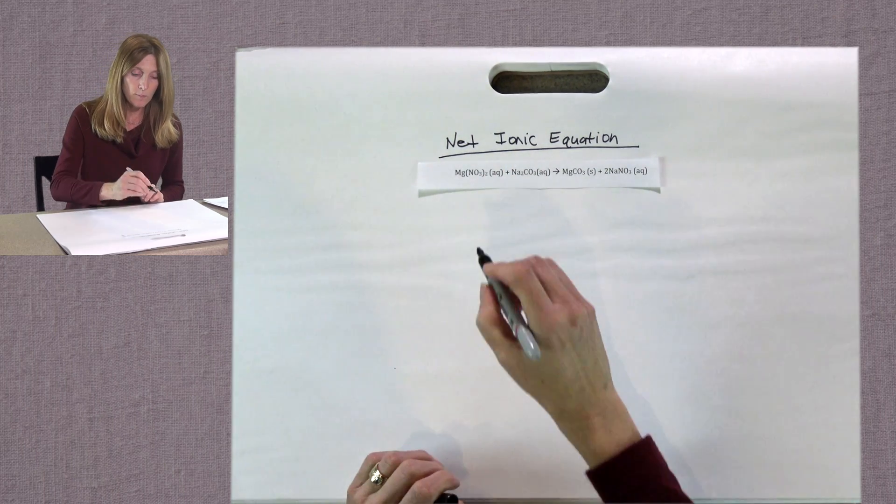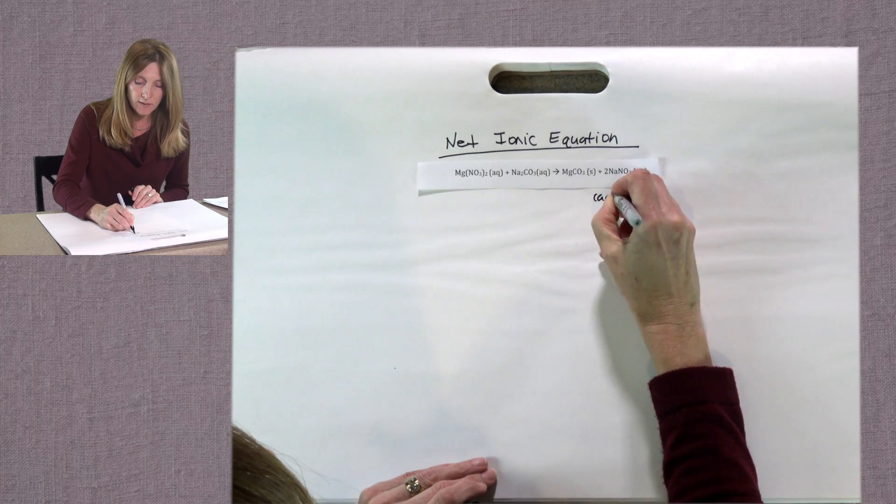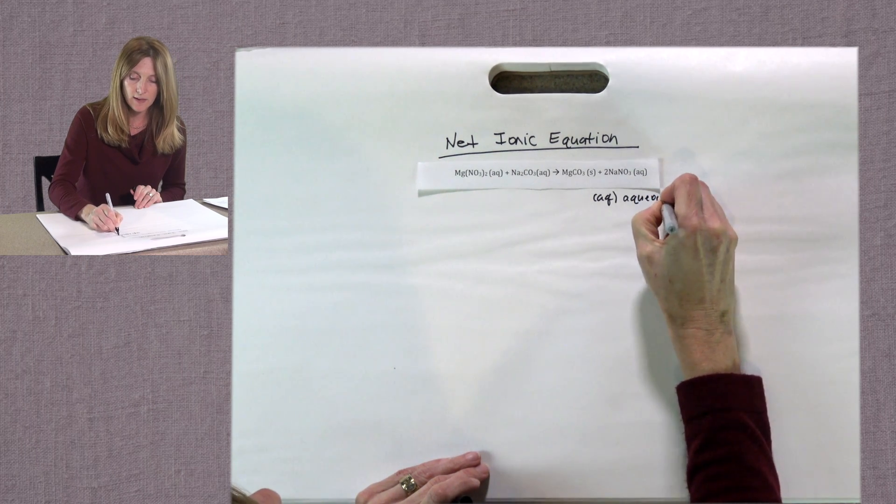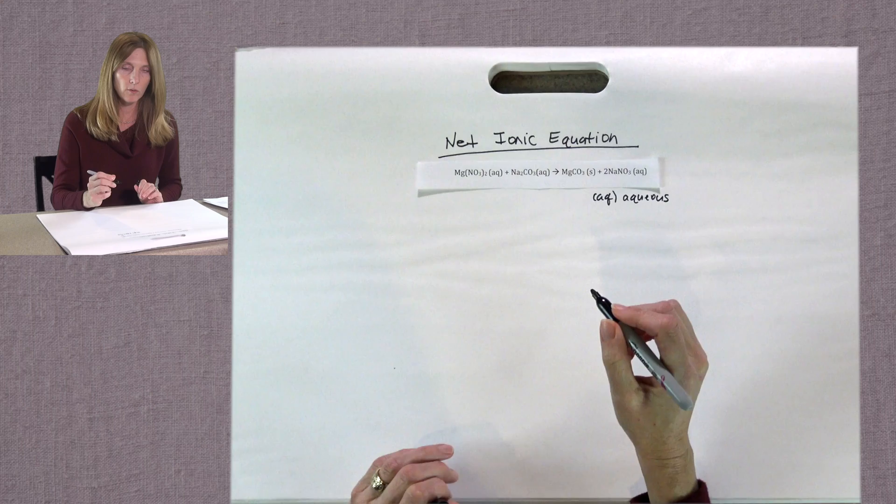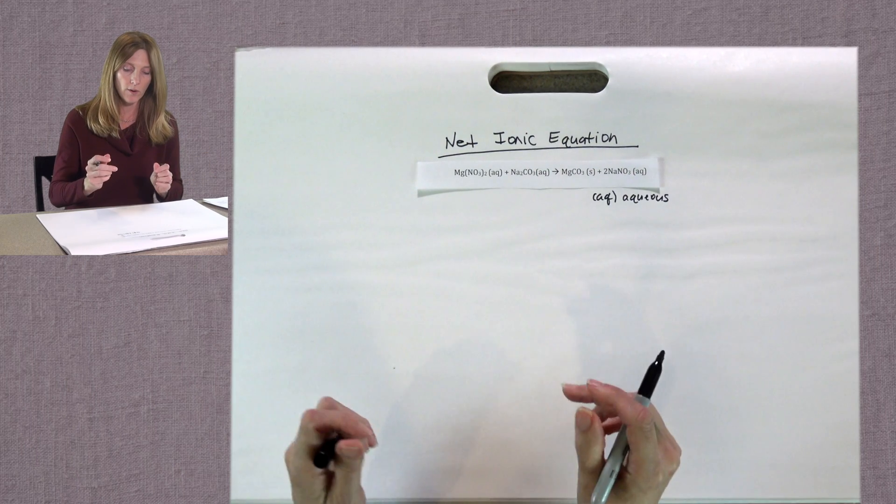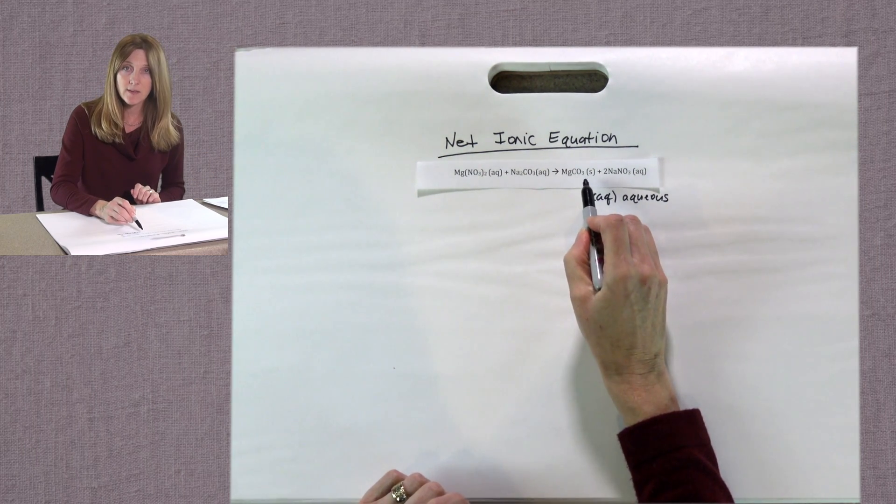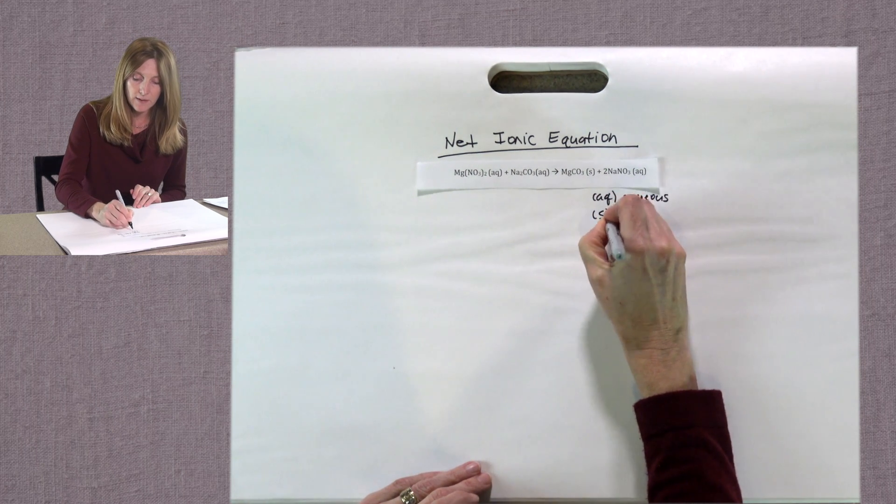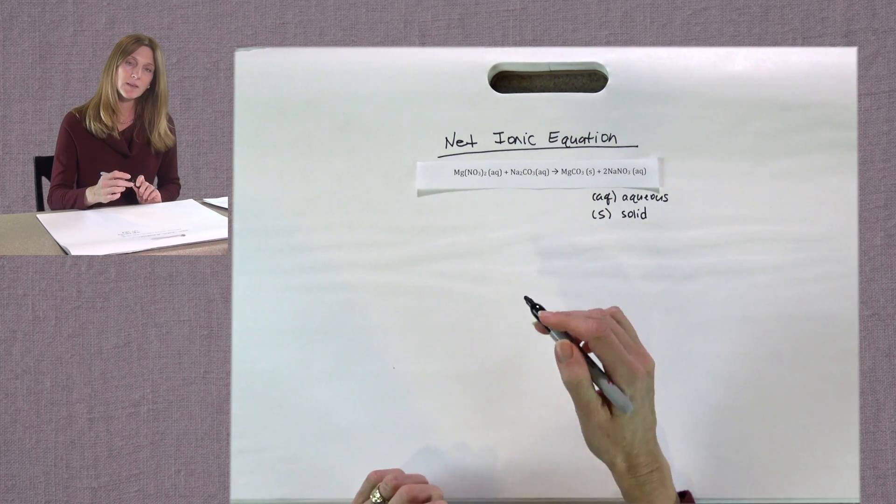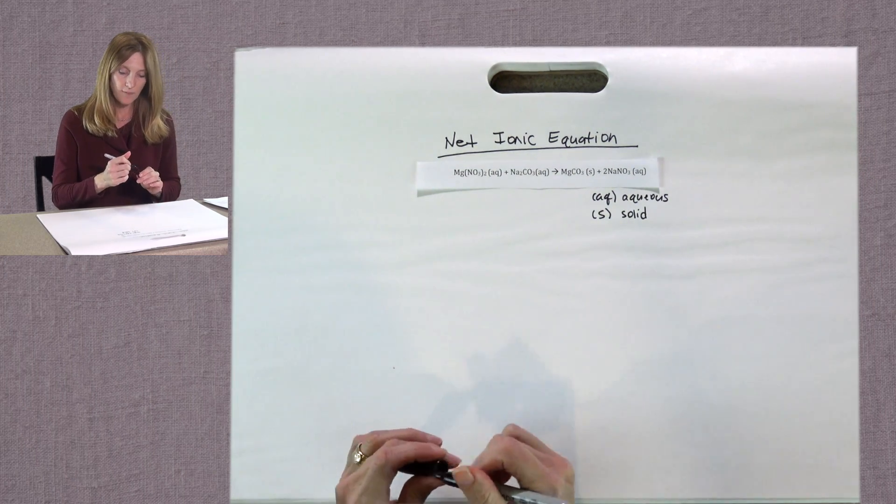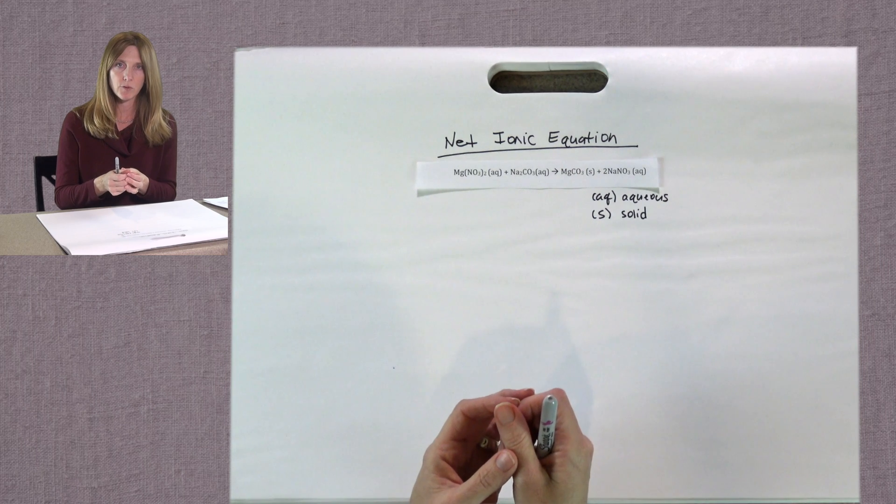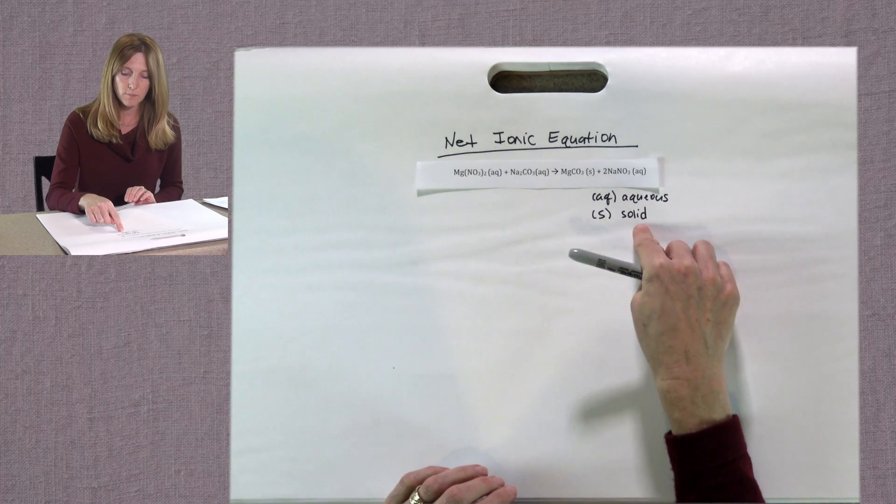I'm going to write this down so we can remember. Remember AQ means that compound is aqueous. Aqueous means that it is soluble in water or that it will dissolve in water or that those ions will come apart in water. We also see an S in this chemical formula. Remember S means solid. S means solid, which means that those two particular ions will remain together and they will precipitate from the solution.